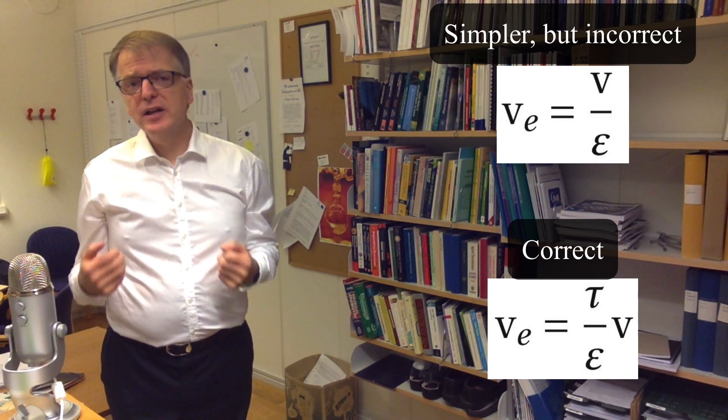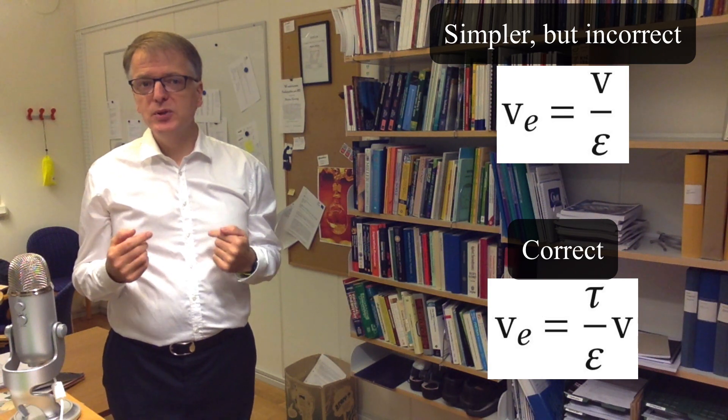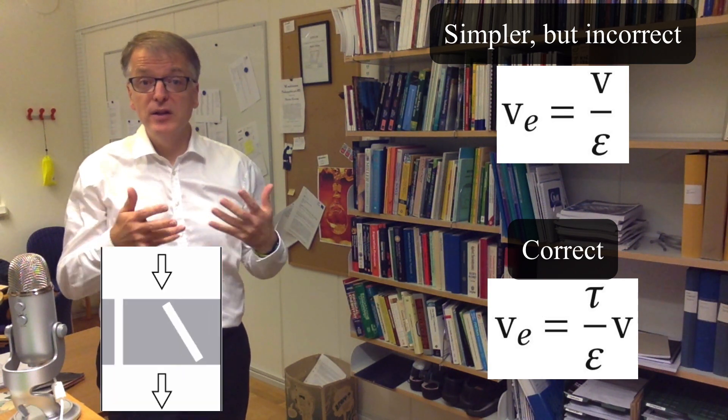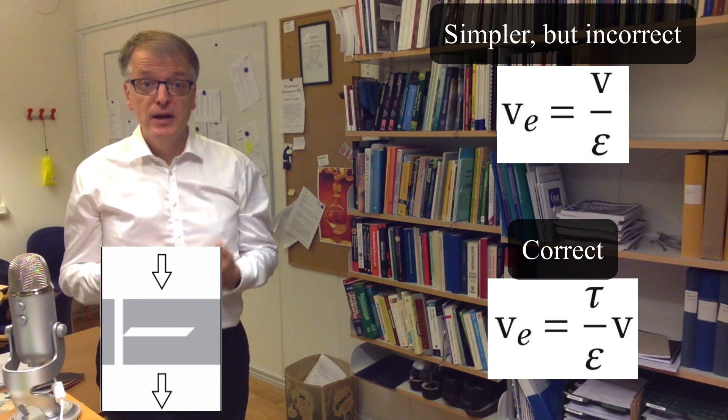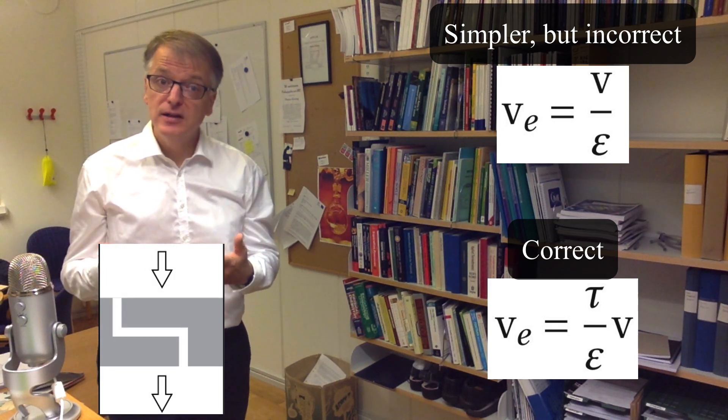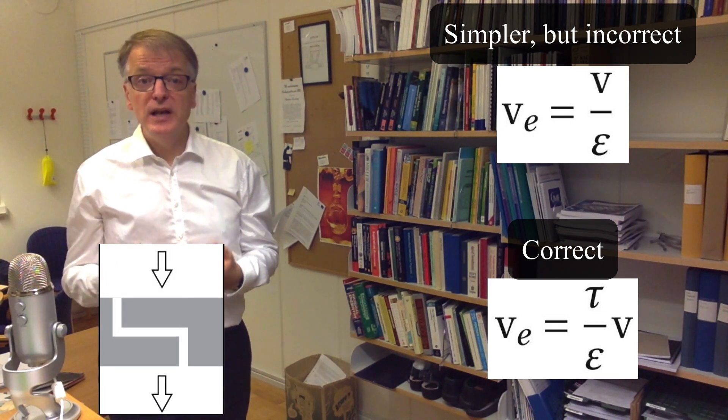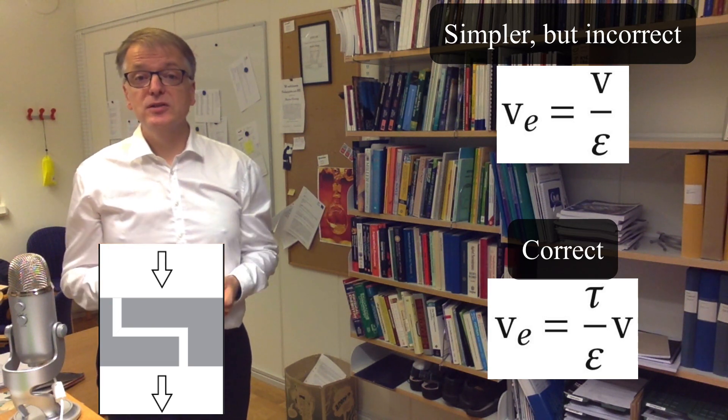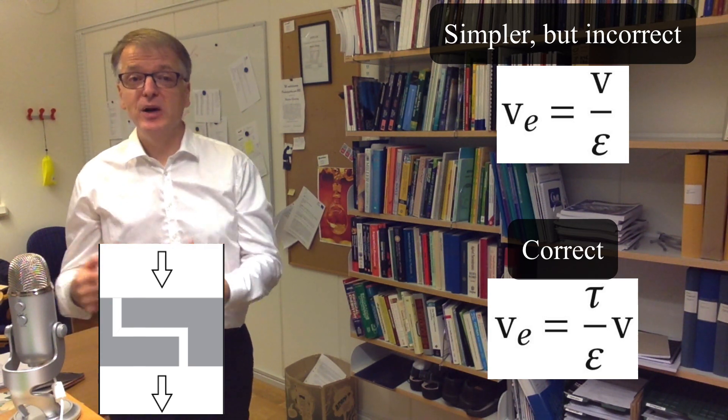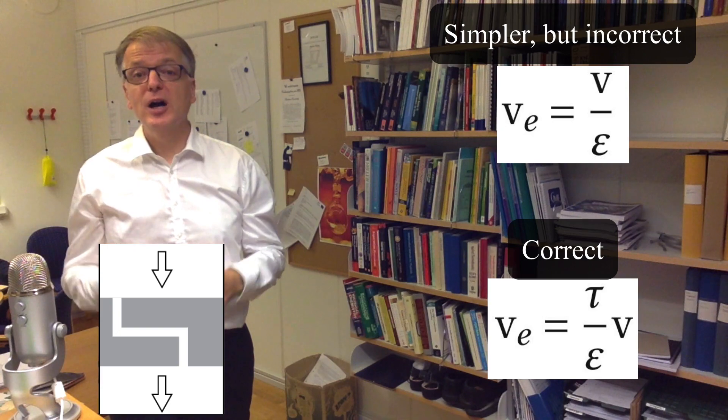And secondly, consider that your brightest students might end up doing a thought experiment like the one I have just shown you. And my guess is that if you keep on using the simplified, incorrect equation, you will actually be discouraging your brightest students from trying to understand the equations they are supposed to learn how to use.